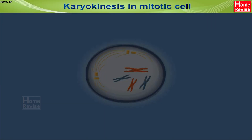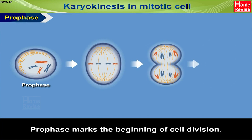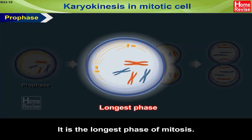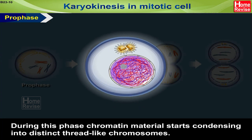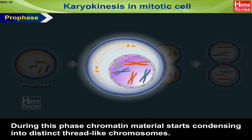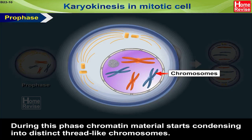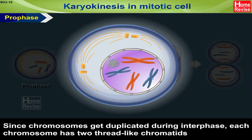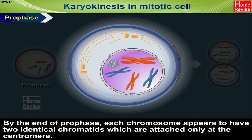Karyokinesis in mitotic cells. 1. Prophase: Prophase marks the beginning of cell division. It is the longest phase of mitosis. During this phase, chromatin material starts condensing into distinct thread-like chromosomes. Since chromosomes get duplicated during interphase, each chromosome has two thread-like chromatids, as seen in the figure. By the end of prophase, each chromosome appears to have two identical chromatids, which are attached only at the centromere.